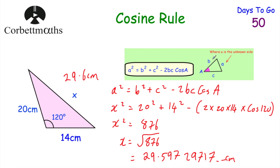As we've just seen, the cosine rule is useful when you've got two sides and the angle between them to find the length of the third side. But what's also fantastic is that if you've got a triangle and you know the lengths of all three sides, you can work out the size of one of the angles. So let's have a look at a question.